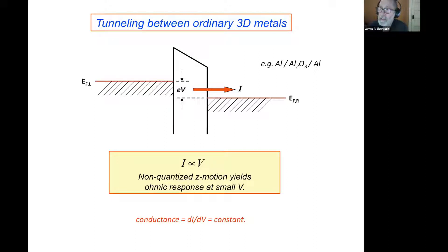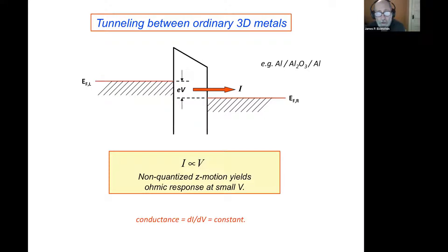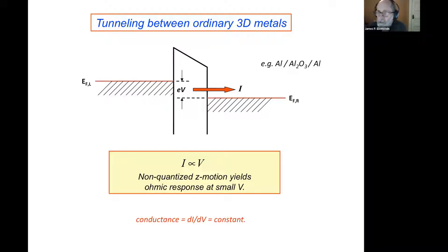Consider tunneling between two metals — two pieces of aluminum before they go superconducting — at some temperature above their superconducting transition. A current will flow through a barrier layer, maybe made of aluminum oxide, and that tunneling current, at least if the voltage between the two conductors isn't too large, is just proportional to the voltage applied. That's a simple result of basic quantum mechanics.